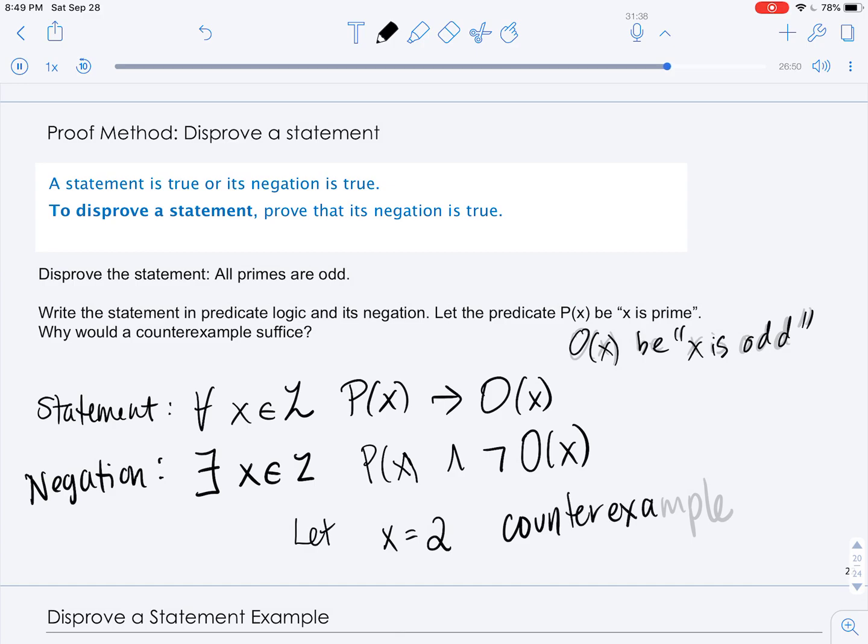2 is our counterexample to show that the statement is false. So if you have a statement of the form for any, a predicate holds, when you negate it you get there exists, then negate the predicate. A counterexample is sufficient in those examples to disprove the original statement and to prove that the negation is true.